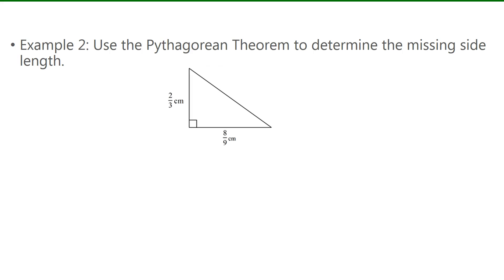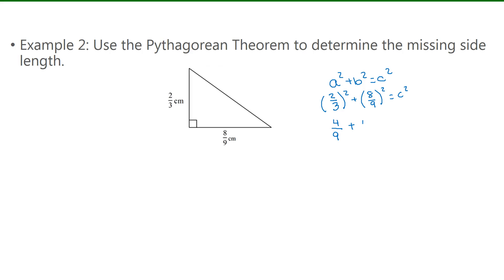Now for this example, we have to use the Pythagorean theorem, which states that a squared plus b squared equals c squared. Here we're looking for the hypotenuse, which is c. So I have to square 2 over 3, and square 8 over 9. To square a fraction, I can just square the numerator and denominator separately. So 2 squared is 4, 3 squared is 9. Now 8 squared is 64, and 9 squared is 81.